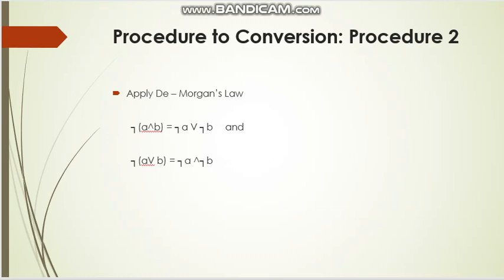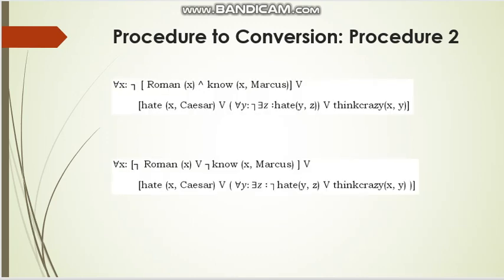Procedure 2 is De Morgan's Law. If the NOT sign is outside a bracket containing an AND, then removing the bracket gives: NOT A OR NOT B. If OR is inside the bracket, removing the bracket gives an AND sign. We apply De Morgan's Law to remove the braces.